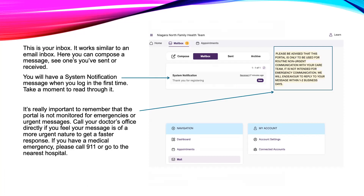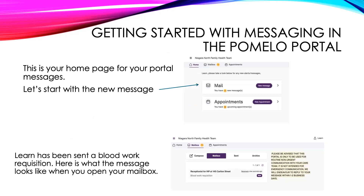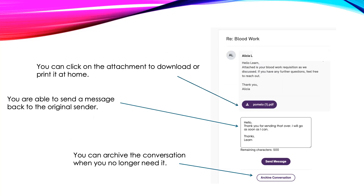It can take one to two business days for a reply in Pomelo, and if your concern is of a more urgent nature, we do not want you to wait for a reply. Mr. Pomelo has a new message from his healthcare provider. Here, we've had a blood work requisition sent to Mr. Pomelo. You are able to open the attachment, save it, or print it as needed. You are able to reply to this message as well. When you're finished with the message, you are able to archive it to remove it from your inbox.